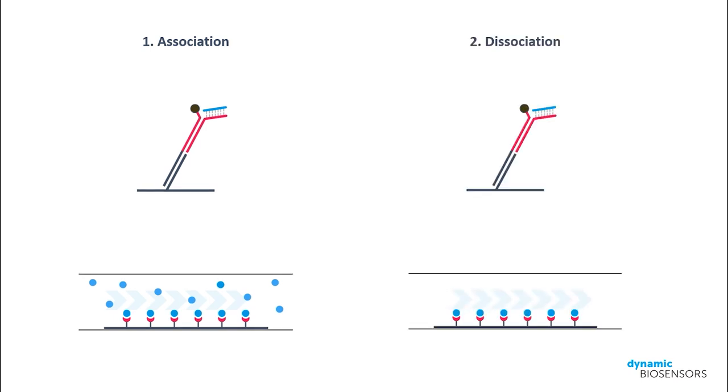During the dissociation phase, analyte molecules are removed from the channel and pure buffer solution flows across the sensor. Analyte molecules will gradually unbind from the immobilized ligands and wash away.